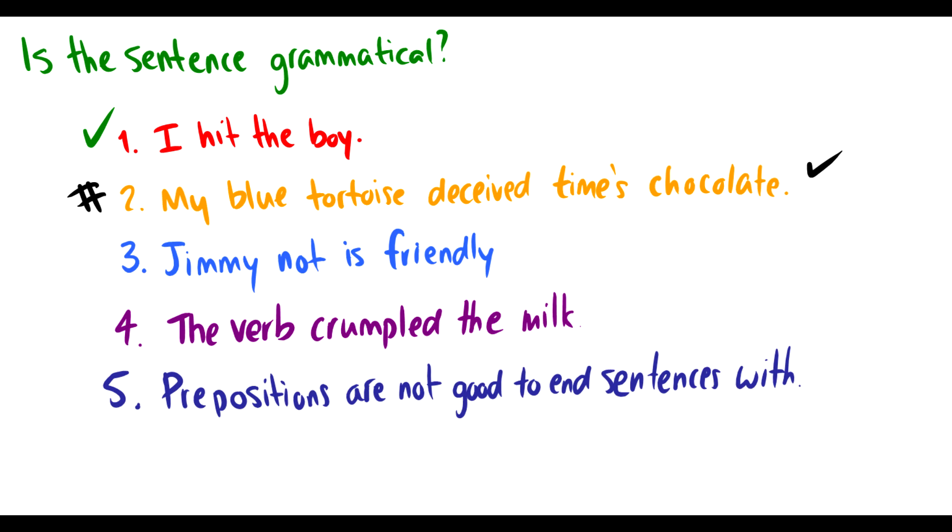Let's take a look at this: 'Jimmy not is friendly.' I think any English speaker would say, you know what, I understand it, but it sounds weird. So when it sounds weird, we put a little star there and we say that's ungrammatical.